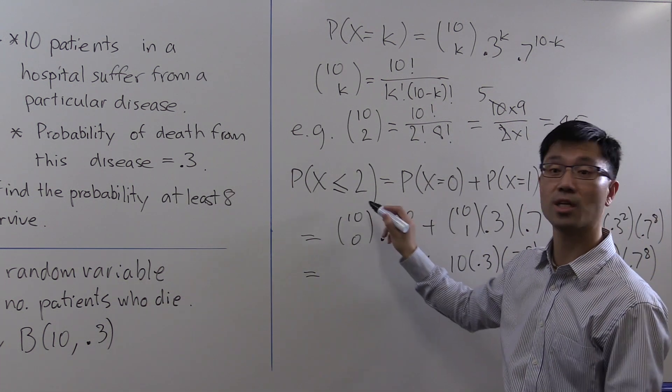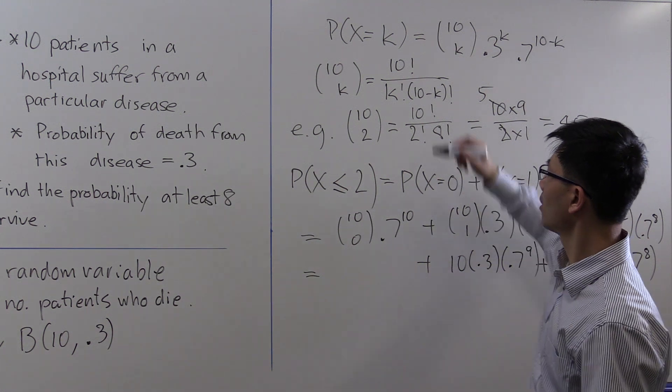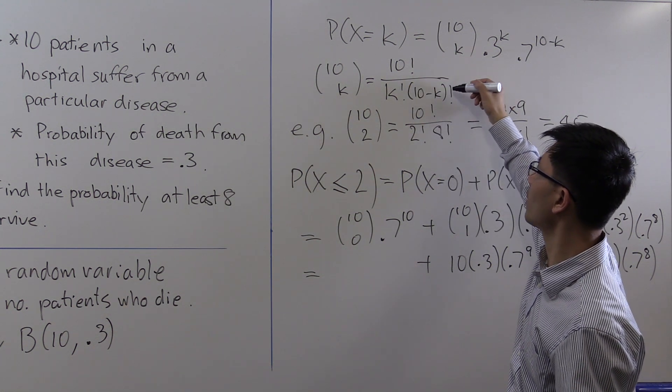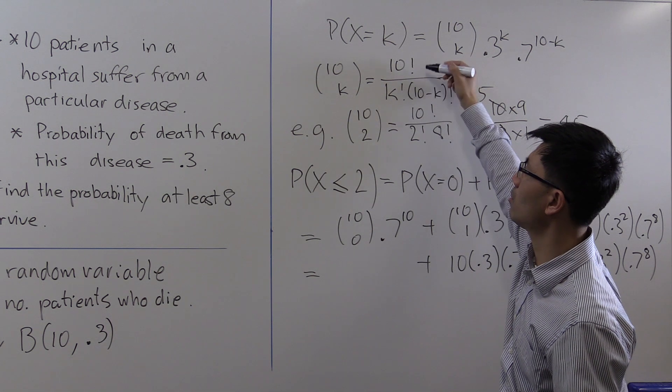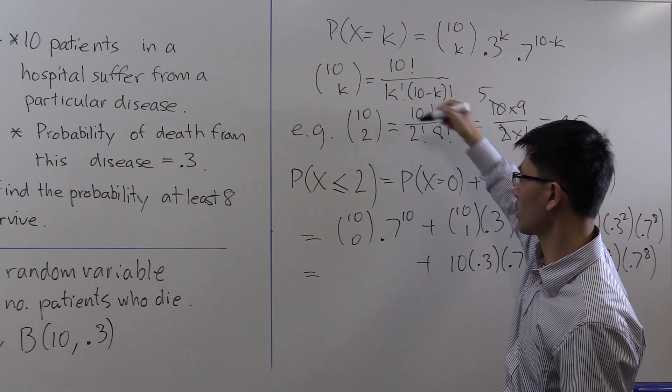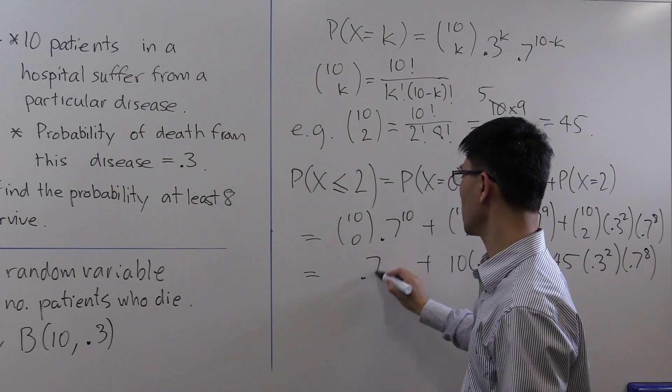And finally you've got 10 choose 0. k equals 0 gives 0 factorial. The 10 factorial in the numerator cancels with the 10 factorial in the denominator, giving you 1. So that's just 0.7 to the 10.